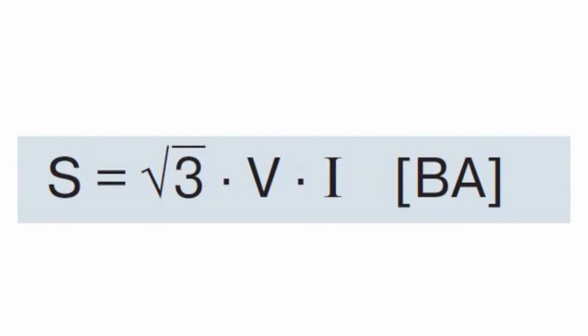The operation principle of electric equipment is based on converting power into other energy forms. Electric power consumed by equipment from the power supply source is called total power, indicated as S, and measured in volt-amperes. It consists of active and reactive powers. S equals the product of voltage and current multiplied by the square root of 3.